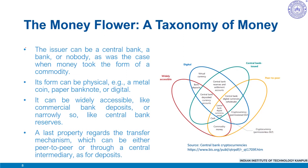While most modern-day transactions occur through means ultimately supported by central banks, over time a wide range of public and private payment systems have also emerged. These can be best summarized by a taxonomy which can be characterized as the Money Flower. The Money Flower distinguishes four key properties of money.